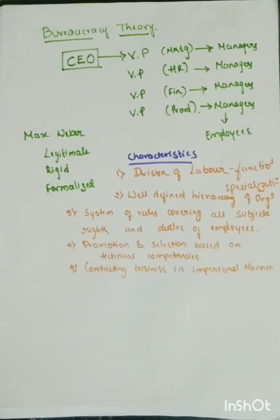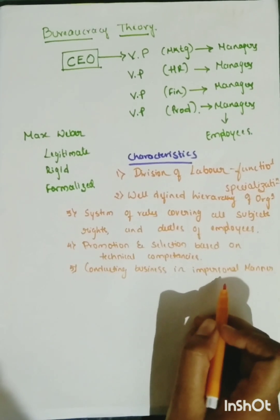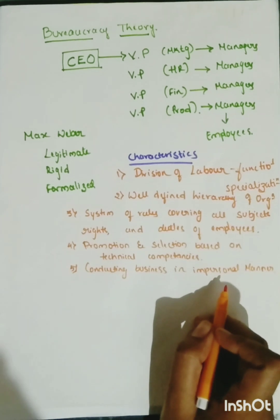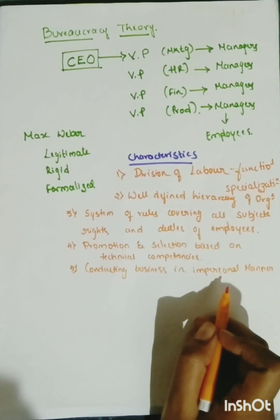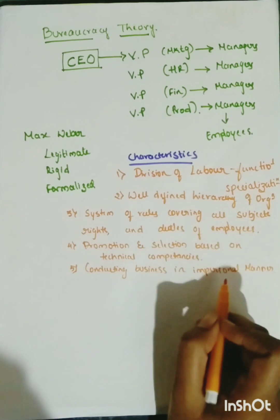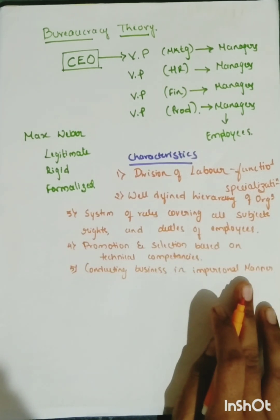The next characteristic explains conducting business in an impersonal manner. That means suppose a manager already knows a few people and their behavior and attitude, and they've been knowing them for many years. Then when a new employee joins, at that time whatever managers or top level management or vice presidents there are, they have to be impersonal, meaning they have to be impartial and not take things personally.